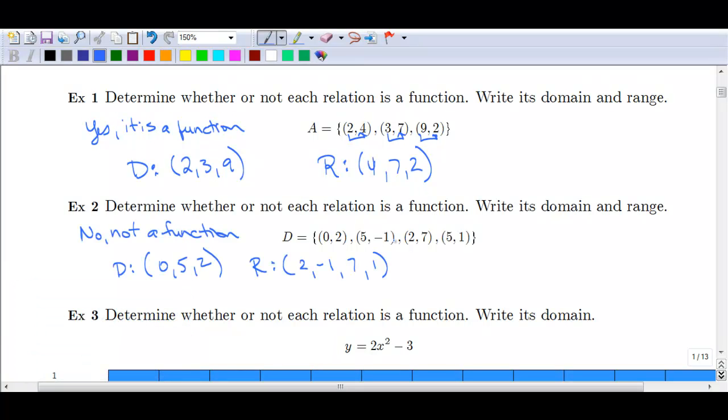You should have established that this is not a function, primarily because you have this point here, five, negative one, and five, one. Both of those have the same X value going to different Y values. Another way to tell is that your domain here has three elements that is smaller than the four elements in the range. That means that this is not a function.